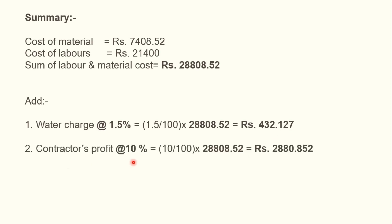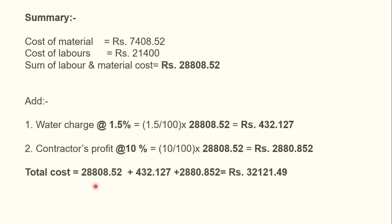Contractor profit is taken as 10% of labor plus material cost: (10 / 100) × 28,808.52 = 2880.852 rupees. Total cost of plaster equals 28,808.52 (labor + material) plus 432.127 (water charges) plus 2880.852 (contractor profit), which equals 32,121.50 rupees. This is the procedure to calculate cost of plastering; this cost may vary by location.